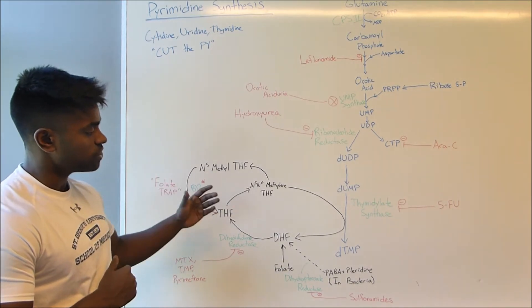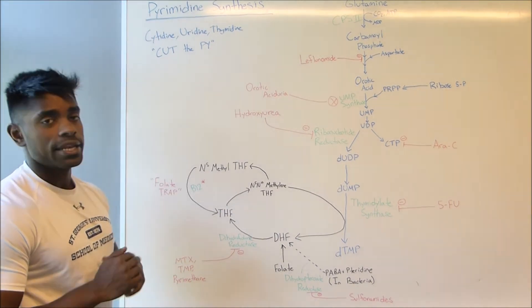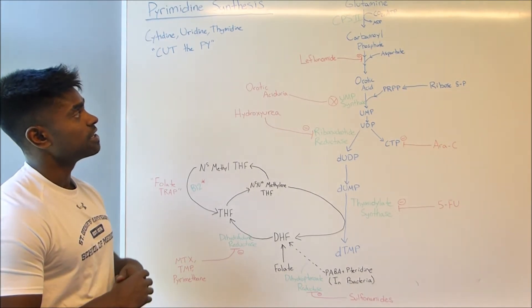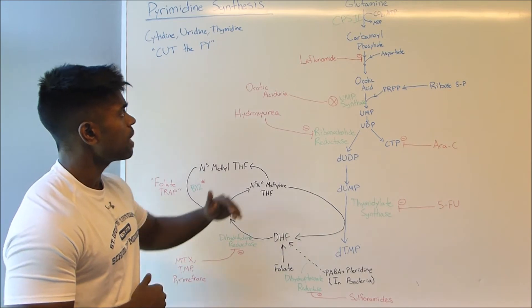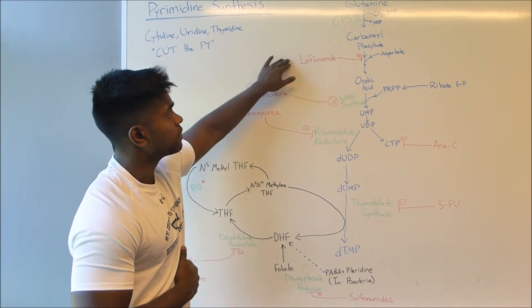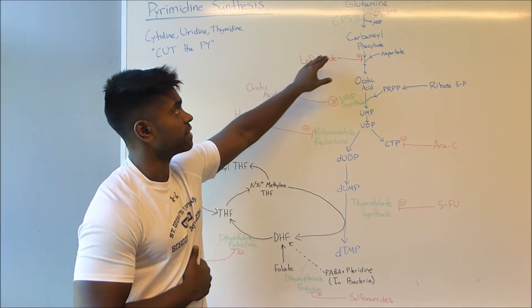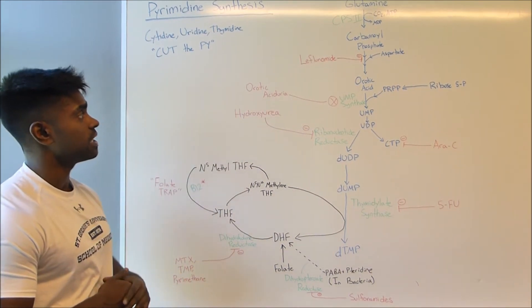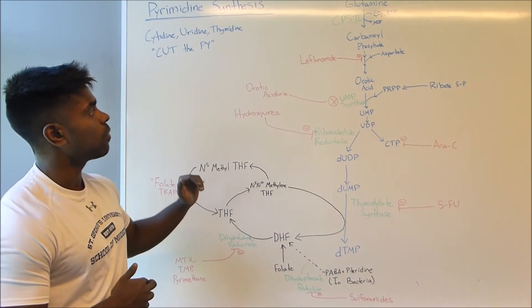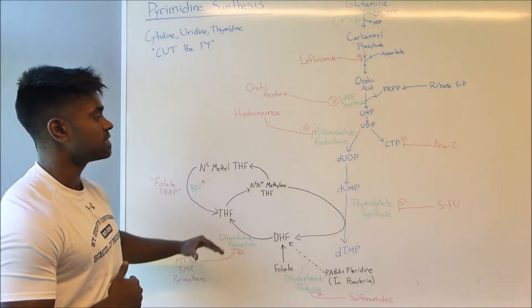Now that's pretty much the gist of the pathway itself. Now let's sort of talk about the different drugs and diseases that occur within the pathway. Now of course we're going to have leflunomide right here during the carbamoyl phosphate to orotic acid step. That's going to be inhibiting that stage. And what I want to spend more time is actually on these enzymes following.